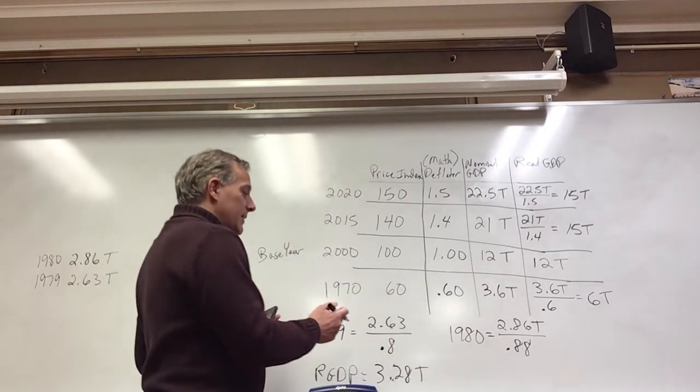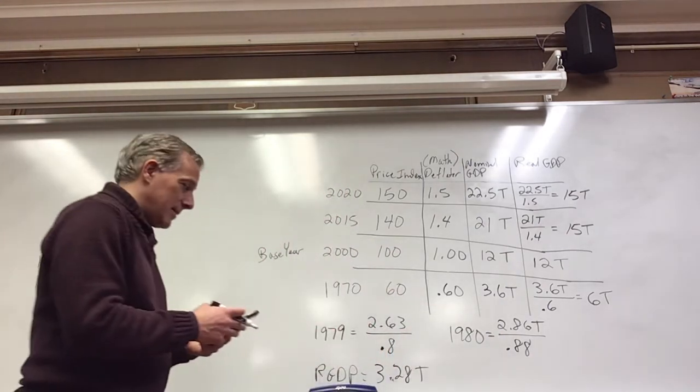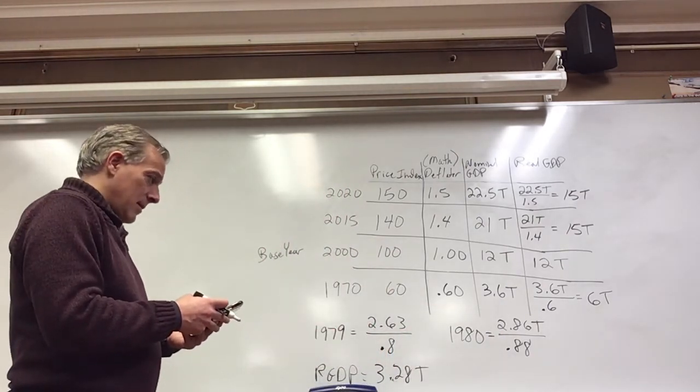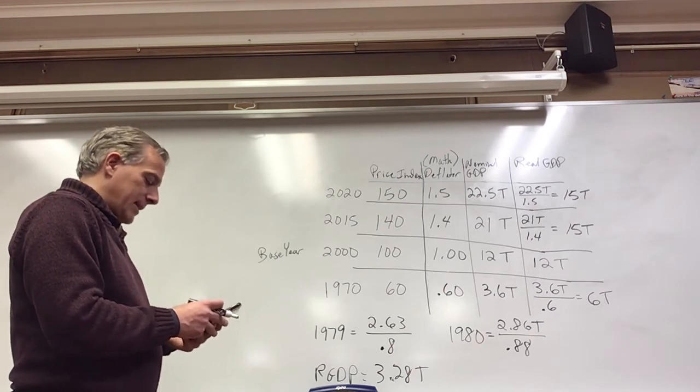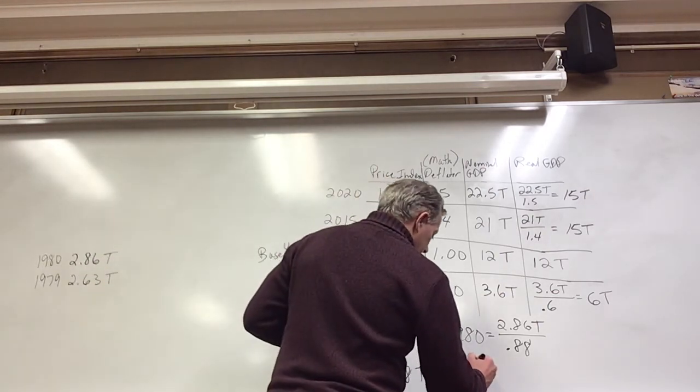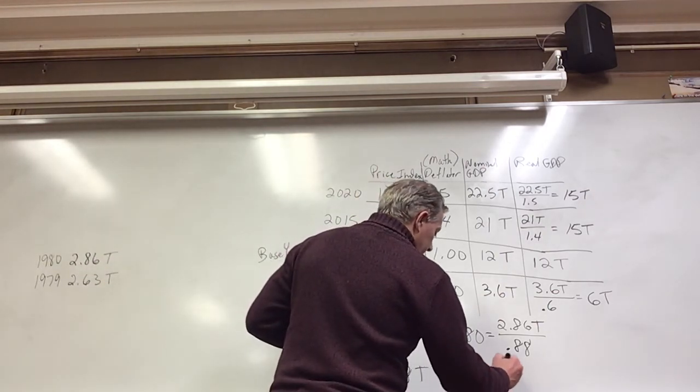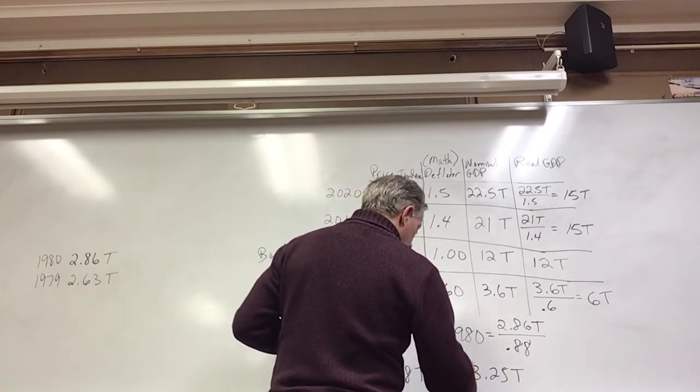Now, the point of doing this is there's a pretty significant increase in nominal GDP year over year. But when we take into account the inflation, 2.86 divided by 0.88, this is real GDP of 3.25 trillion in 1980.